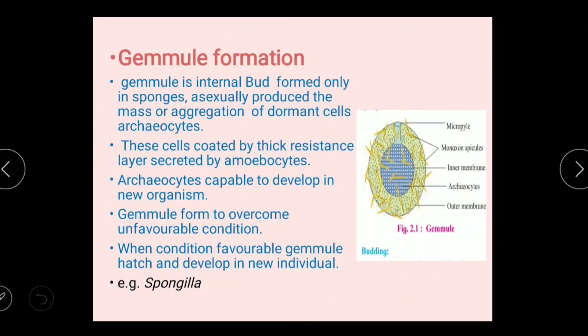First, gemmule formation, which is found in sponges. A gemmule is an internal bud which is formed by aggregation — a mass or aggregation — of archeocytes, which are dormant cells also known as archeocytes.